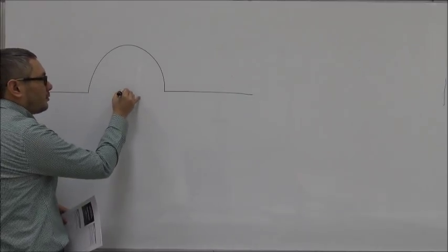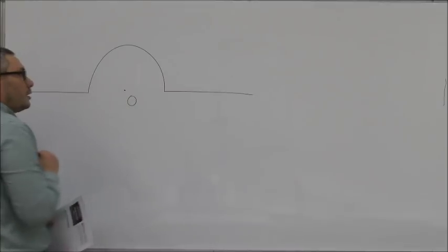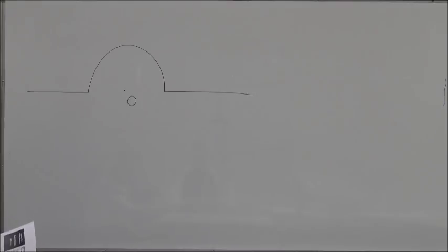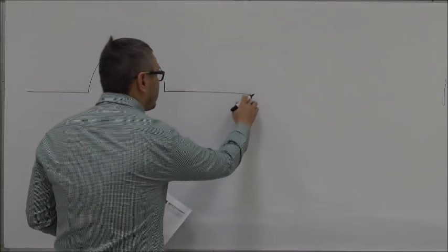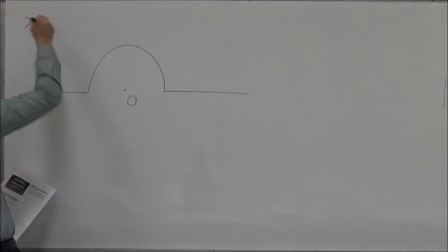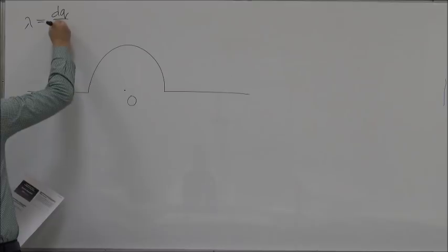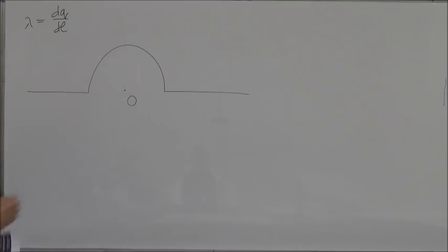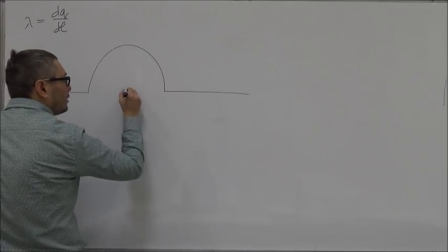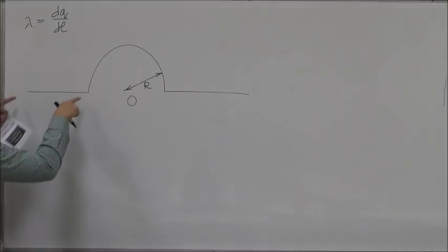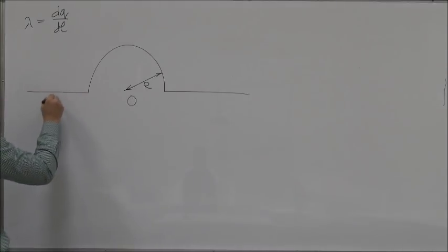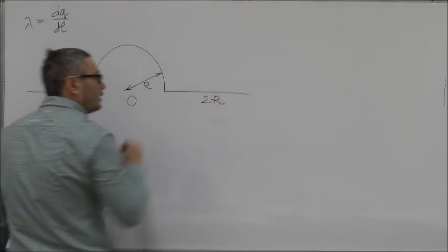In this problem we need to find the electric potential at point O. We have a piece of wire bent in this form with a semicircle in the center and point O is right at the center. The piece of wire has a linear charge density lambda, so it is uniformly charged. The radius of the semicircle is R, this distance here is 2R, and this one is also 2R.